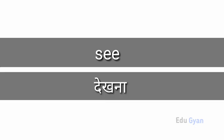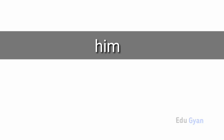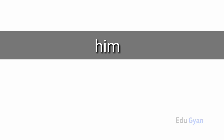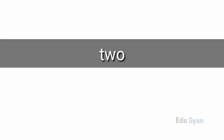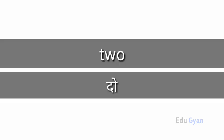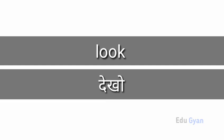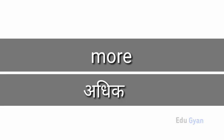See means dekhana. Him means ushe. To means though. Has means hai. Look means dekhou, ya dekhana. More means adhik.